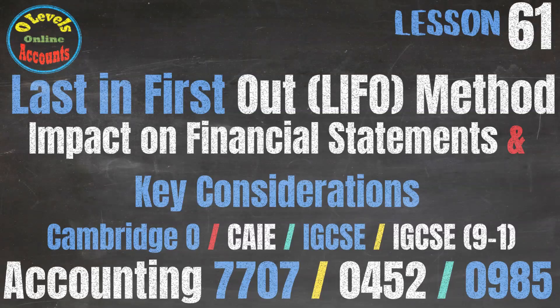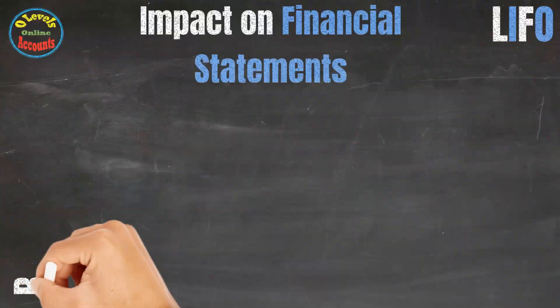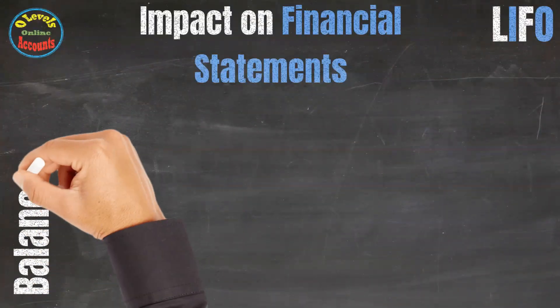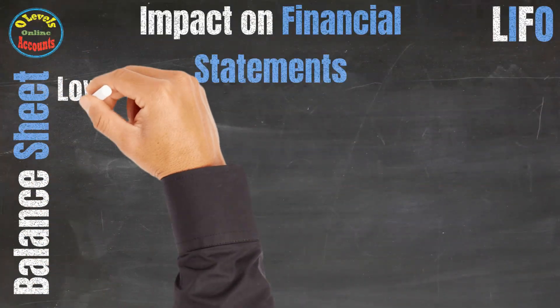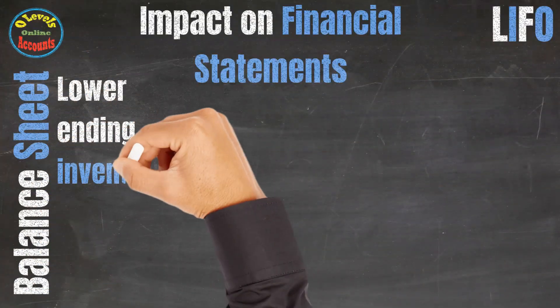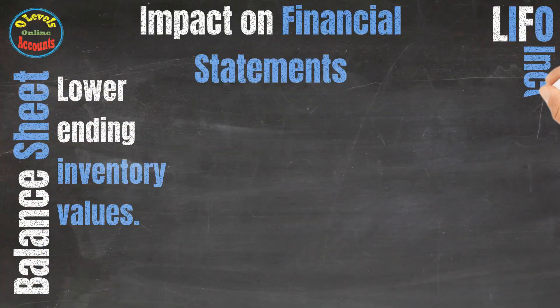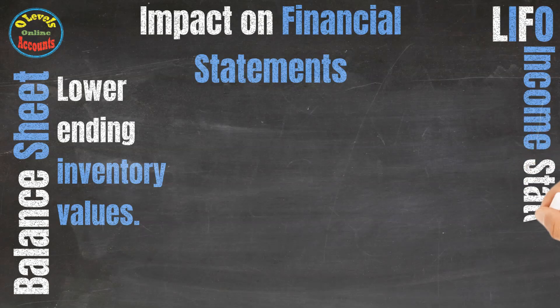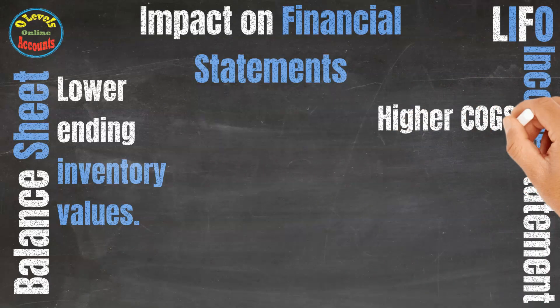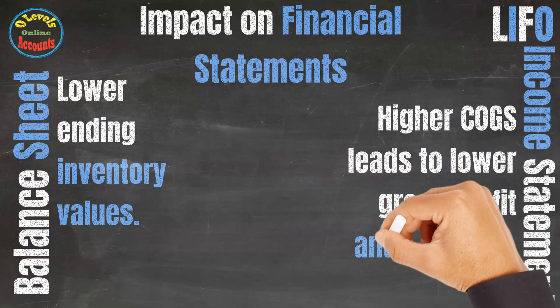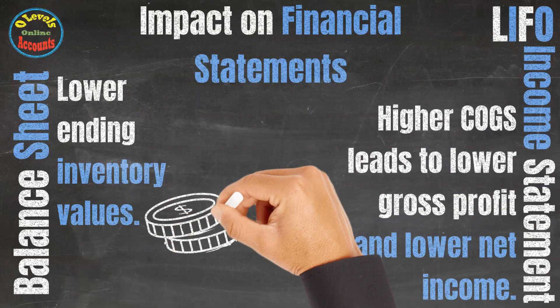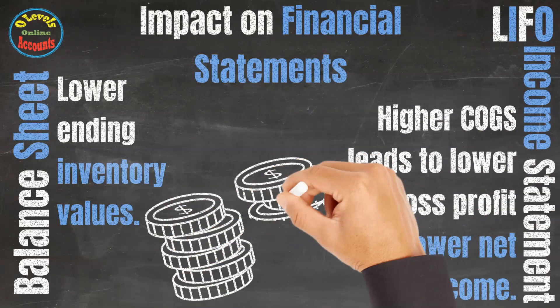Let's begin the lesson material. In the balance sheet, LIFO results in lower ending inventory values. In the income statement, higher cost of goods sold leads to lower gross profit and lower net income.